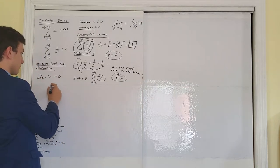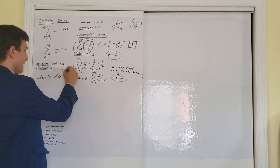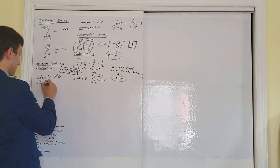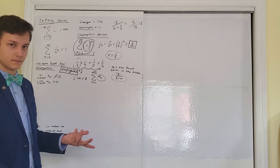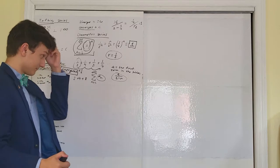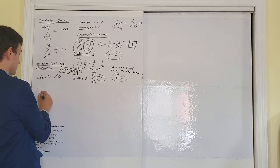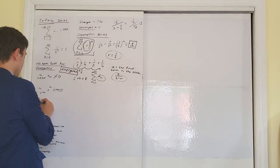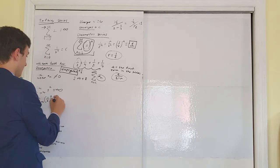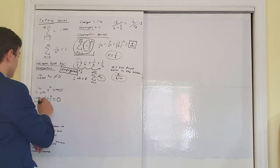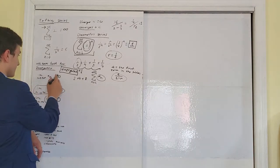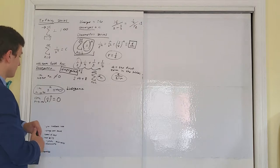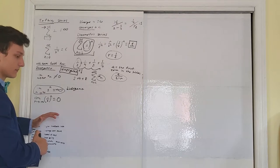If the limit as n goes to infinity of a_sub_n does not equal 0, then we know for a fact it is divergent. If, however, the limit as n approaches infinity of a_sub_n does equal 0, the test is indeterminate. In our example, the limit of 2^n goes to infinity, so it's divergent. But the limit of 1 over 2^n approaches 0 — so that test is inconclusive. I'll get into that later.